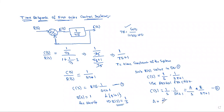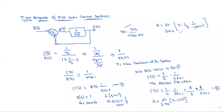To find A: taking the limit as S tends to 0 of S into C(s). Substituting C(s) equals 1/s into 1/(ST plus 1), the S terms cancel. Taking the limit as S tends to 0 of 1/(ST plus 1), substituting S equals 0 gives 1/1, so A is equal to 1.